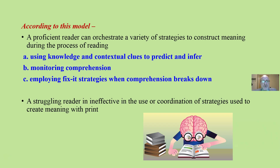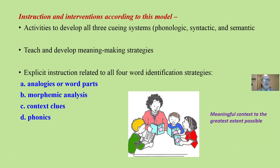Here are just some of those strategies: using knowledge and contextual clues to predict and infer as we read; monitoring comprehension through metacognition; and employing fix-up strategies when comprehension breaks down. A struggling reader is not very effective in the use of these strategies to create meaning with print. According to this model, instruction and interventions should develop not just the phonological system, but all three cueing systems. If you're doing just phonics, you're giving one-third of a reading education.